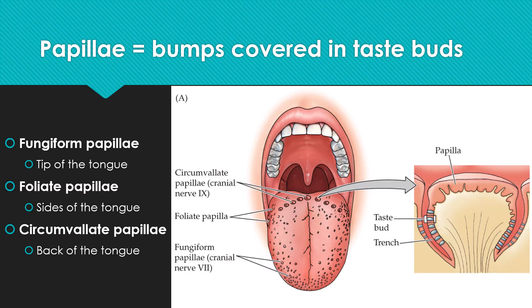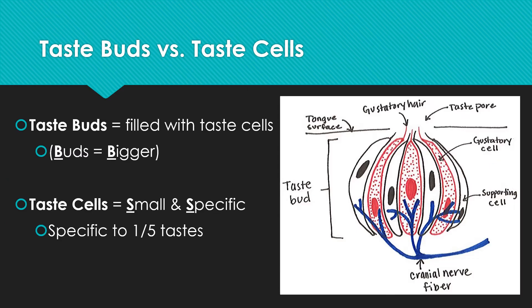In fact, the tongue is home to over 10,000 taste buds, which are switched out approximately once every two weeks. These taste buds are in turn filled with taste cells. If you have trouble remembering which fits inside the other, just keep in mind that the B's go together. Taste buds are bigger. Taste cells, on the other hand, are small and specific.